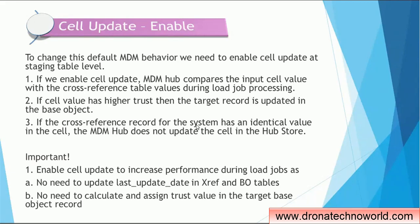If there is no change in the value — meaning if the values are identical in the staging table and in the XREP table — then MDM hub does not update the cell in the hub store. Two important things happen: first, the last update date column will not be updated in the XREP or the base object. Also, there is no need to calculate the trust as the cell values are the same, so we get rid of calculating and assigning the trust value to the target base object record. Because of skipping these two processes, it helps to improve the performance of the load job. So enabling cell update is always a good idea to achieve better performance.